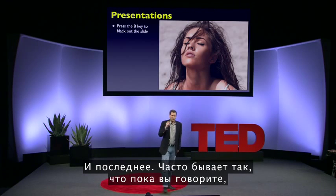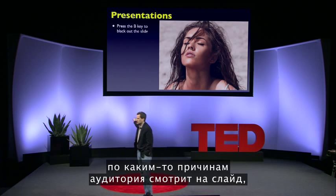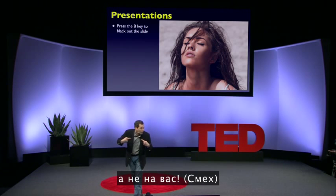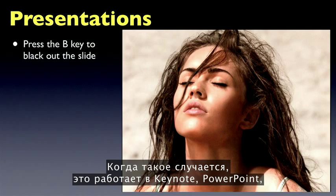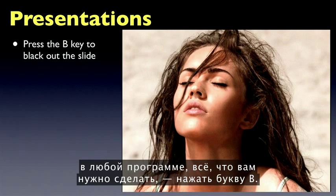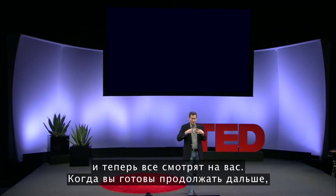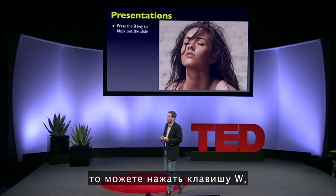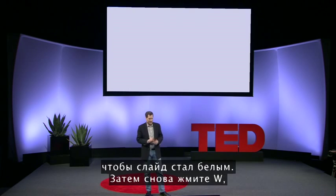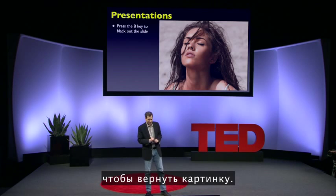Finally, it often happens that you're giving a talk and the audience is looking at the slide instead of at you. When that happens — this works in Keynote, PowerPoint, every program — all you do is hit the letter B key, B for blackout, to black out the slide and make everybody look at you. When you're ready to go on, hit B again. And if you're really on a roll, you can hit the W key for whiteout to white out the slide, then hit W again to unblank it.